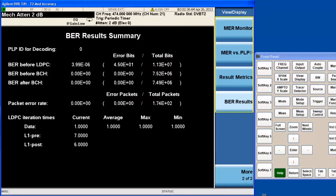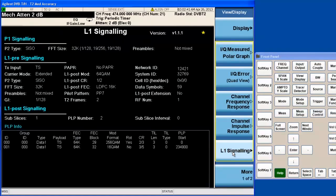In the L1 signaling view, the decoded L1 signaling is shown, including pre-signaling and post-signaling for each PLP.